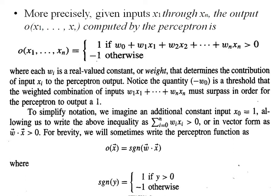We studied this while designing a learning problem. The target function is a linear combination of inputs with some weights. The first term is an additive constant w0, and the remaining weights w1 to wn are multiplied with inputs x1 to xn. Each weight wi is a real-valued constant that determines the contribution of that input to the Perceptron output.